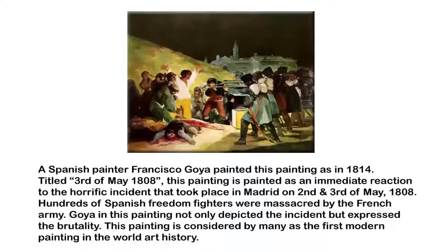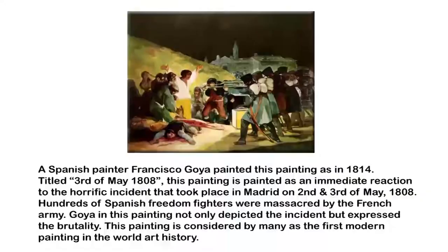Before we discuss the characteristic pictures of Romanticism or Realism, let us begin by looking at one particular painting. This is a painting painted by the very famous Spanish painter Francisco Goya. He painted this work in 1814, and the title suggests something that had happened just a few years back, that is in 1808.